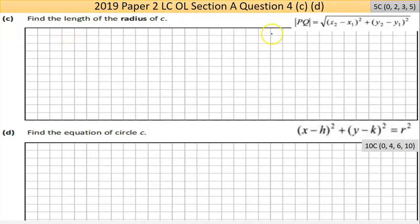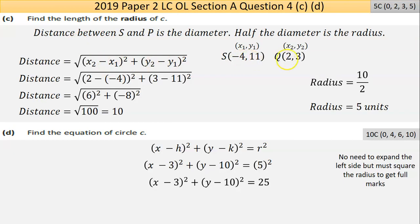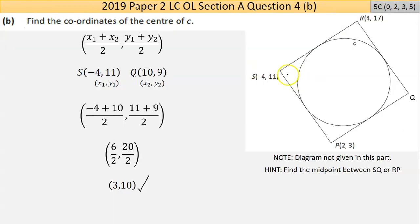Now part C says find the length of the radius. So I've screen printed or screen grabbed the formula from the math tables. You either have this memorized or just retrieve it from the math tables. And I suppose I've written the formula out. Halfway points written out. And labeled between them. Now if I go back to the diagram.